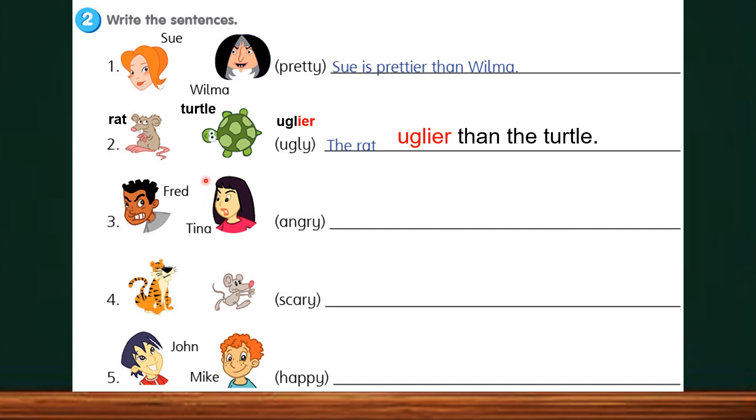Number 3. This is Fred. And this is Tina. The comparative adjective for angry becomes angrier. Y changed to IER. The sentence should be Fred is angrier than Tina.